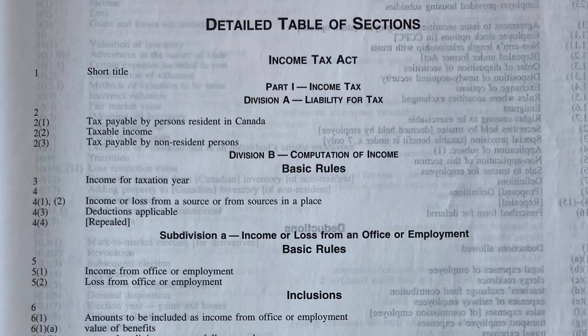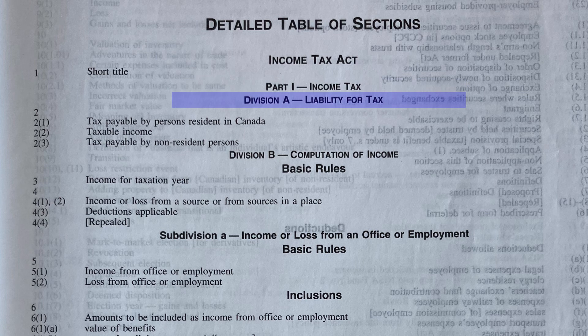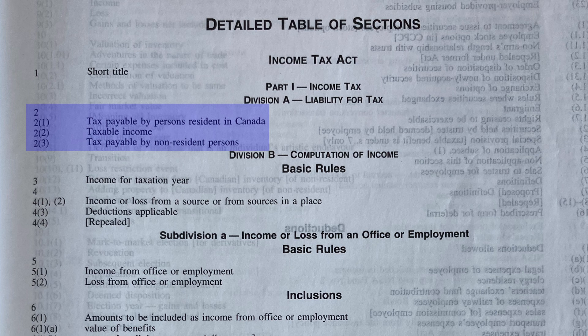Part 1 is labeled Income Tax. In Division A, there is Section 2, which talks about the liability for tax: tax payable by persons resident in Canada, taxable income, and tax payable by non-resident persons.